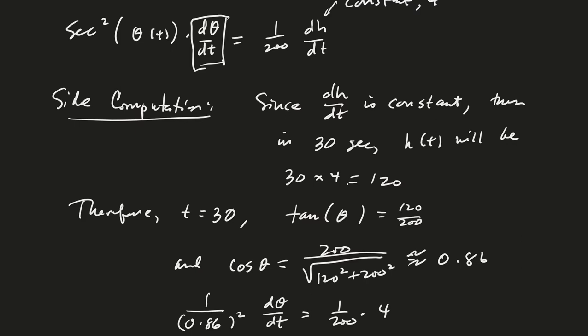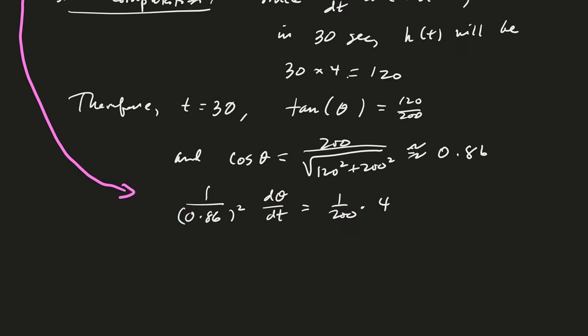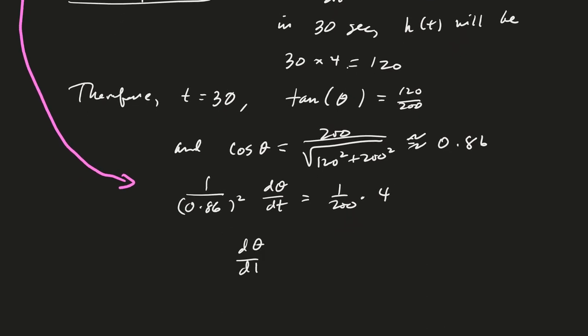So I'm just rewriting everything I know in this equation with numerical values. So that's all what's happening at t equals 30. And so if we compute dθ/dt, what do we get?